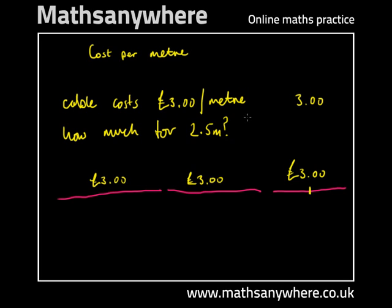We'll do a bit of long division for this: three pounds cut in half — three pounds divided by two. Two goes into three once; two times one is two, three less two is one. Bring down the zero — two goes into ten five times. Don't forget our decimal point stays in the same place. Five times two is ten, ten less ten is zero.